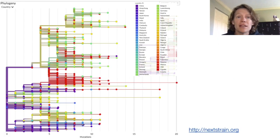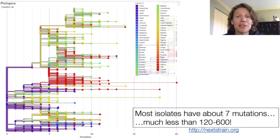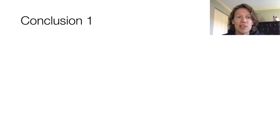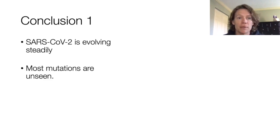This is the latest snapshot from the amazing website nextstrain.org, showing an analysis of about 2,500 genomes of this virus from around the world. If we build an evolutionary family tree of all these genomes — for more information, please see my prior video — each virus circulating today has an average of about seven mutations. This is clearly less than 120 or 600; we don't even need statistics for this. So our first conclusion is that this virus is evolving steadily, on the order of about 2 mutations per month or 25 mutations per year. Most mutations that occur are never actually detected, because they're lost by random chance, genetic drift, or filtered out by purifying selection.